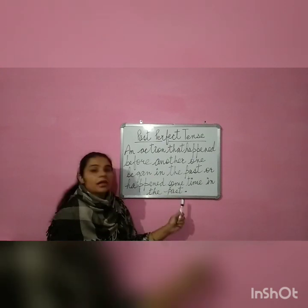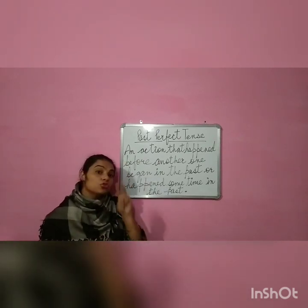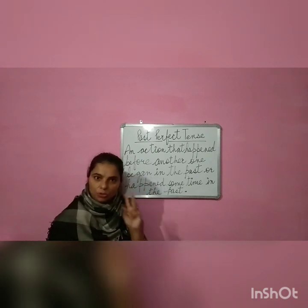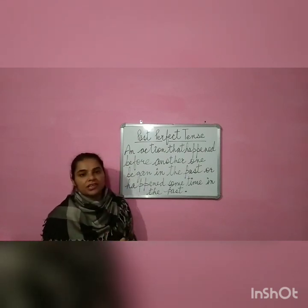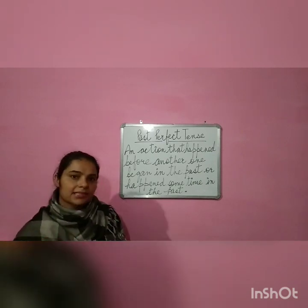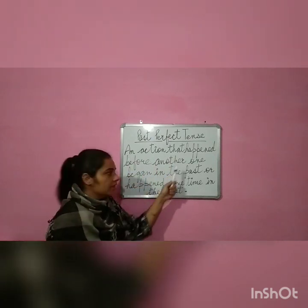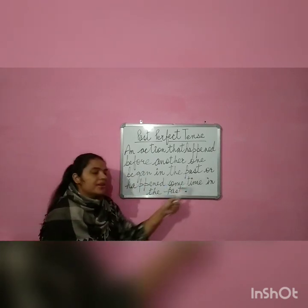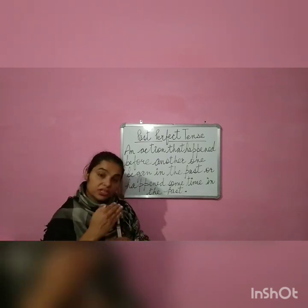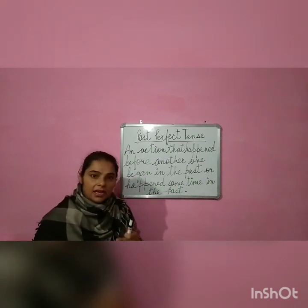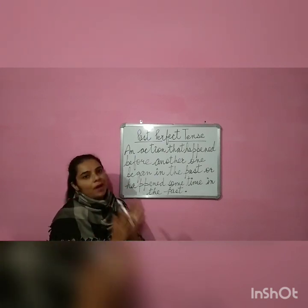Or happened sometime in the past — ya woh kaam past mein kabhi hua tha. Very simple it is — means two actions at a time, but how? Do kaam ek saath huay, lekin kaise? Pehla kaam honne ke baad doosra kaam shuru hoa. So that type of tense is known as past perfect tense. Koi bhi kaam — any work which was going on, uske baad humne doosra kaam start kiya. Ya koi kaam humne past mein kiya, kahin pe kabhi woh kaam hua tha — for that we use past perfect tense.